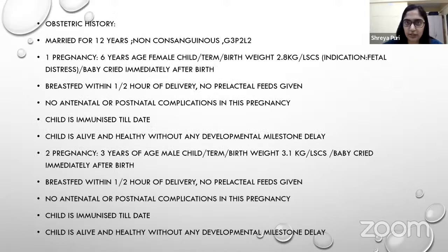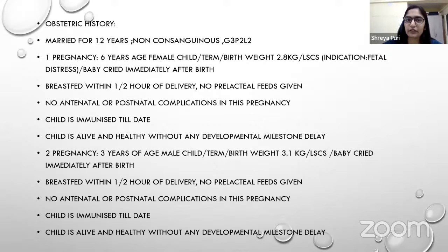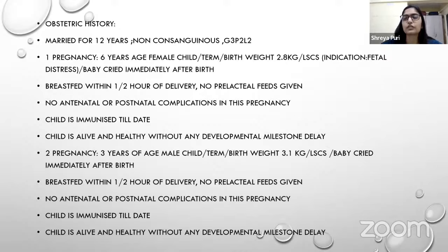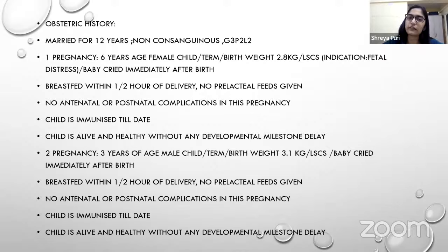Obstetric history: married for 12 years, non-consanguineous marriage. First pregnancy — a 6-year-old female child, term birth, weight 2.8 kg, delivered by LSCS for fetal distress; baby cried immediately, breastfed within half an hour, no pre-lactal feeds, no antenatal or postnatal complications, child immunized and alive and healthy. Second pregnancy — a 3-year-old male child, term birth, weight 3.1 kg, cesarean done due to previous cesarean; baby cried immediately, breastfed within half an hour, no complications, child alive and healthy.